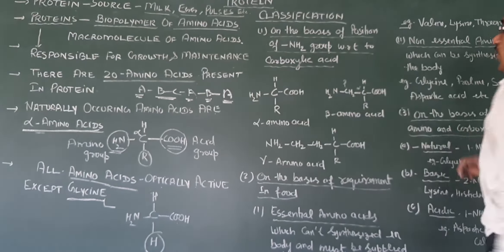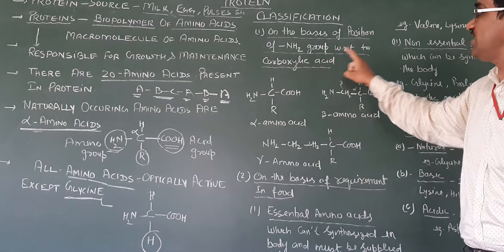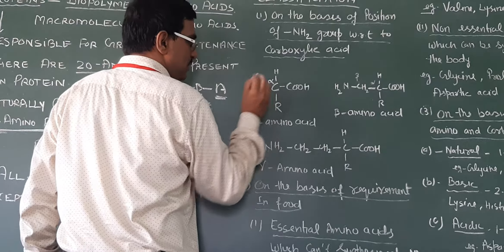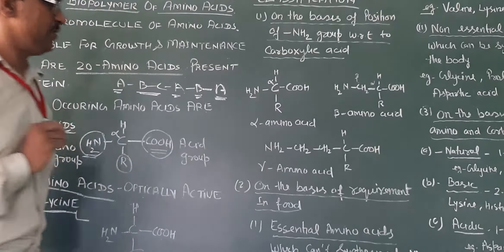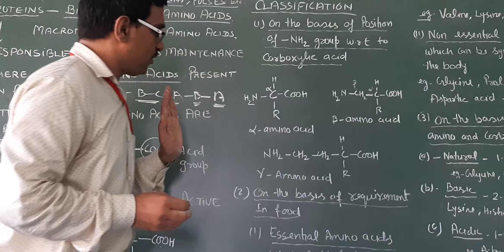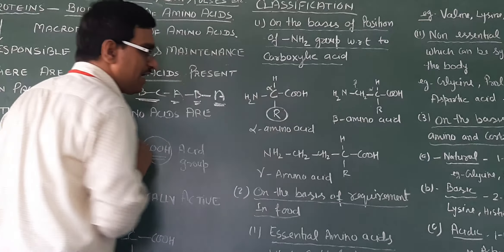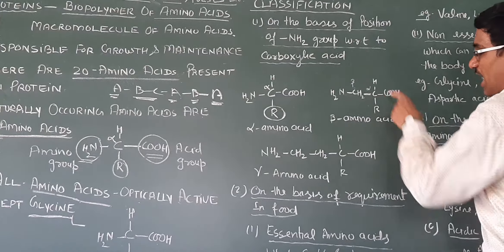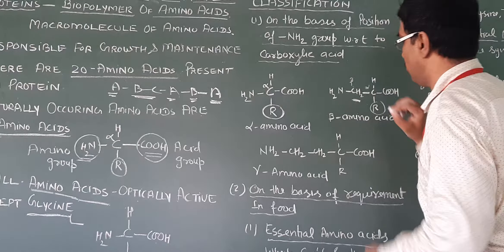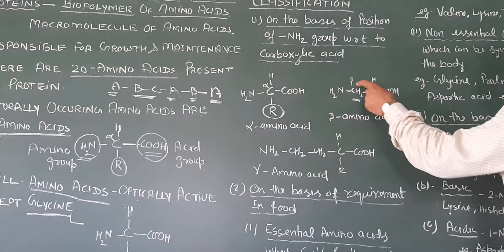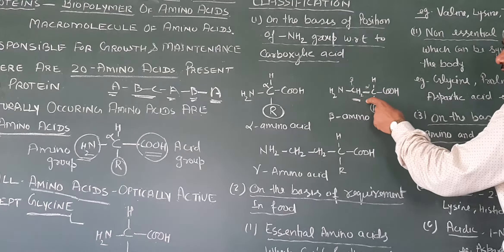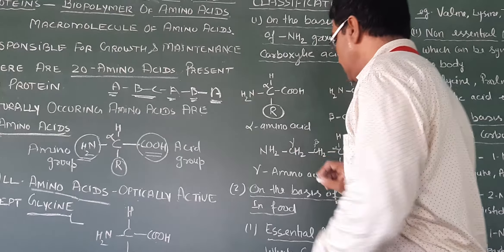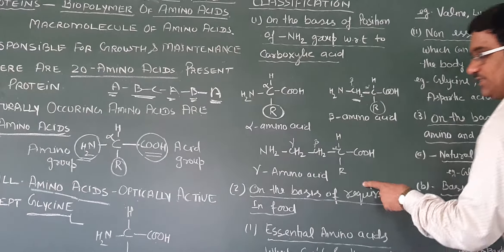Classification of amino acids. First, on the basis of position of NH2 group with respect to carboxyl acid. When NH2 is on the alpha carbon adjacent to COOH, these are alpha amino acids. This is the general formula. When NH2 is on the beta carbon, these are beta amino acids. Similarly, we have gamma amino acids.